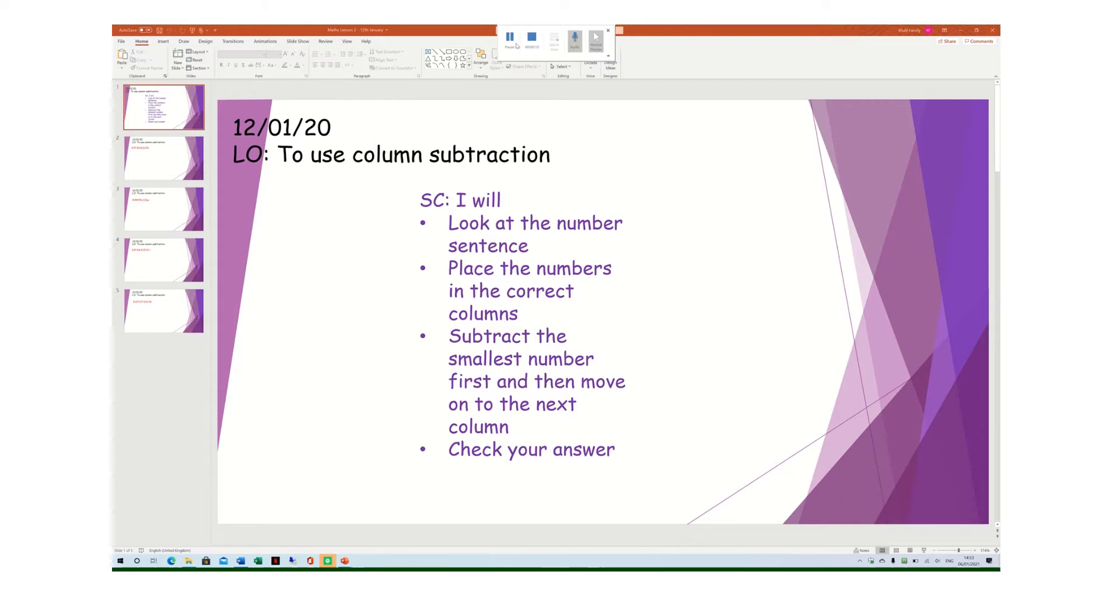It's similar to what we did last week when we were looking at column addition. To be successful today you will look at the number sentence, place the numbers in the correct columns, subtract the smallest number first and then move on to the next column, and then check your answer.